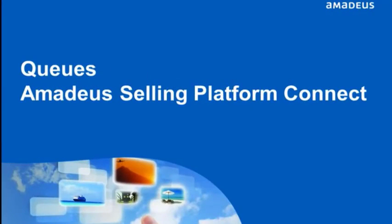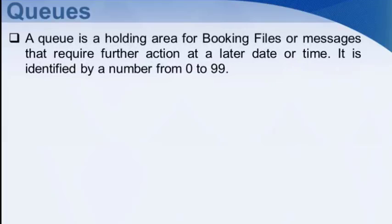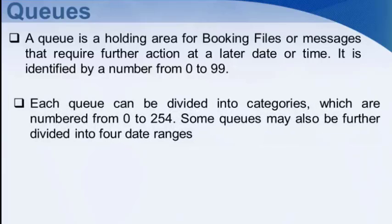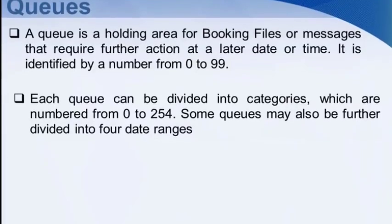This video tutorial is for Amadeus Selling Platform Connect. A queue is a holding area for booking files or messages that require further action at a later date or time. It is identified by a number from 0 to 99. Each queue can be divided into categories, which are numbered from 0 to 254. Some queues may also be further divided into four date ranges.